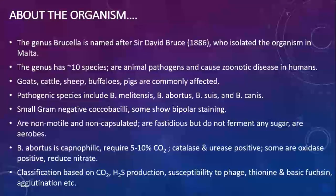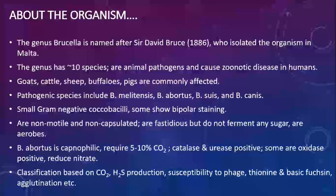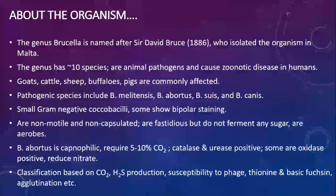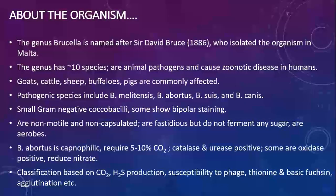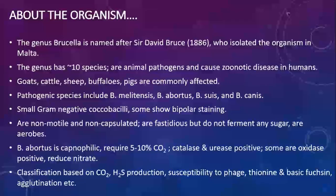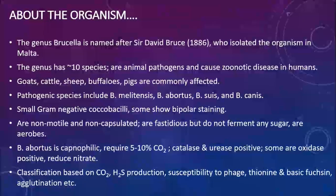All of them reduce nitrate. Classification of Brucella is done on several parameters such as the requirement of carbon dioxide, production of hydrogen sulfide, and susceptibility to a phage known as Tbilisi phage. Susceptibility to dyes such as thionine and basic fuchsin, as well as agglutination to specific antisera, are also used to classify the Brucella genus.